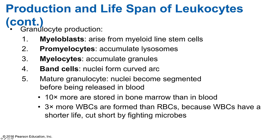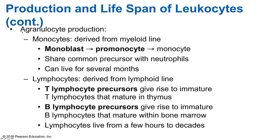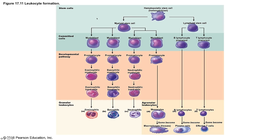The bone marrow stores 10 times more granulocytes than are found in circulating blood. The body produces 3 times more white blood cells than red blood cells due to the short lifespan of WBCs from fighting pathogens. For agranulocytes, monocytes are derived from the myeloid line: hematopoietic stem cell → myeloid stem cell → monoblast → promonocyte → monocyte, and can live for several months. Lymphocytes are derived from the lymphoid line: hematopoietic stem cell → lymphoid stem cell → T or B lymphocyte precursor. T lymphocyte precursors travel to the thymus to mature; B lymphocyte precursors mature within the bone marrow. Lymphocytes can live from a few hours to decades.